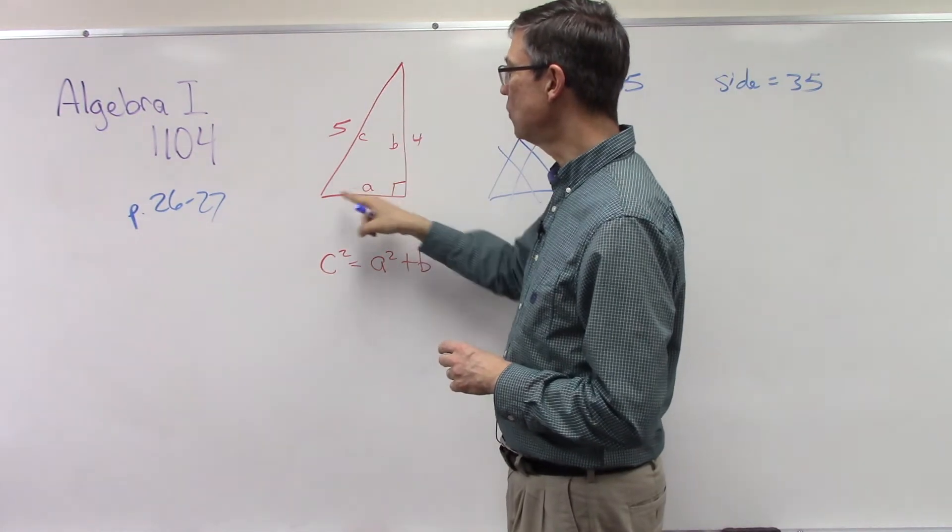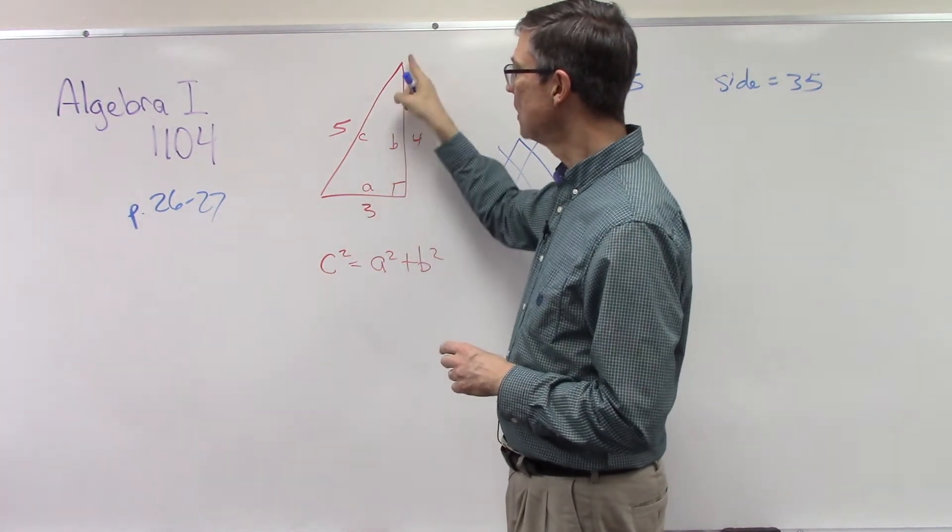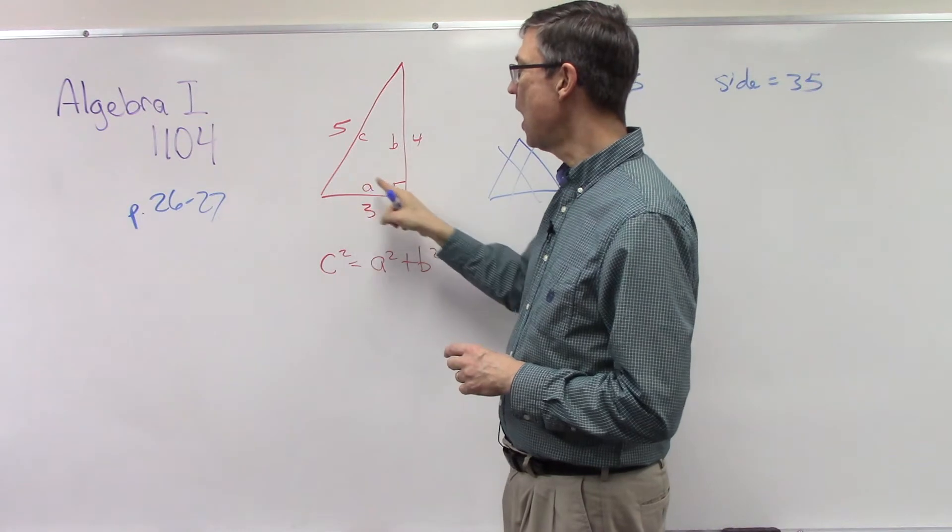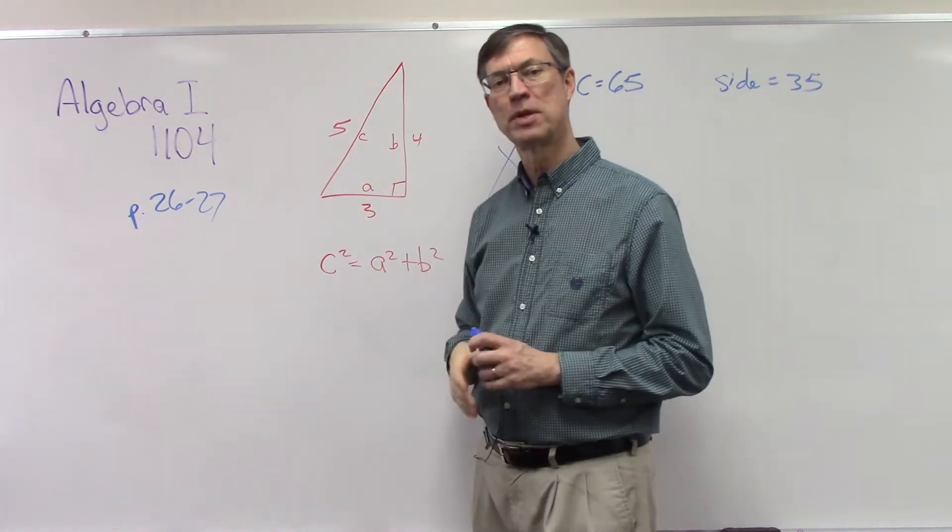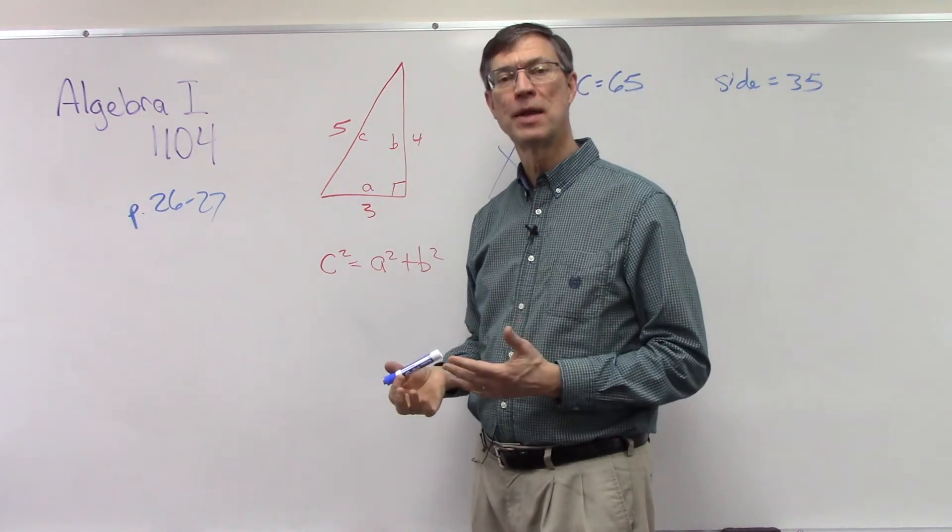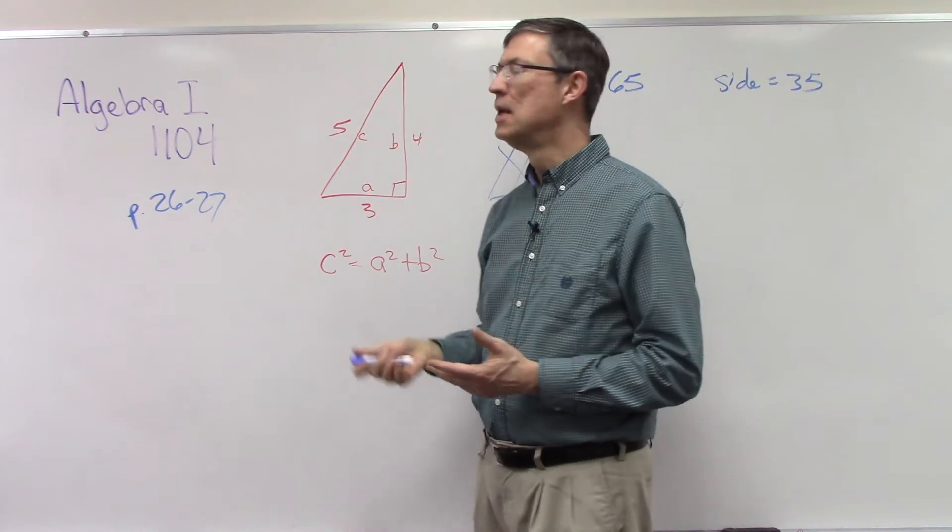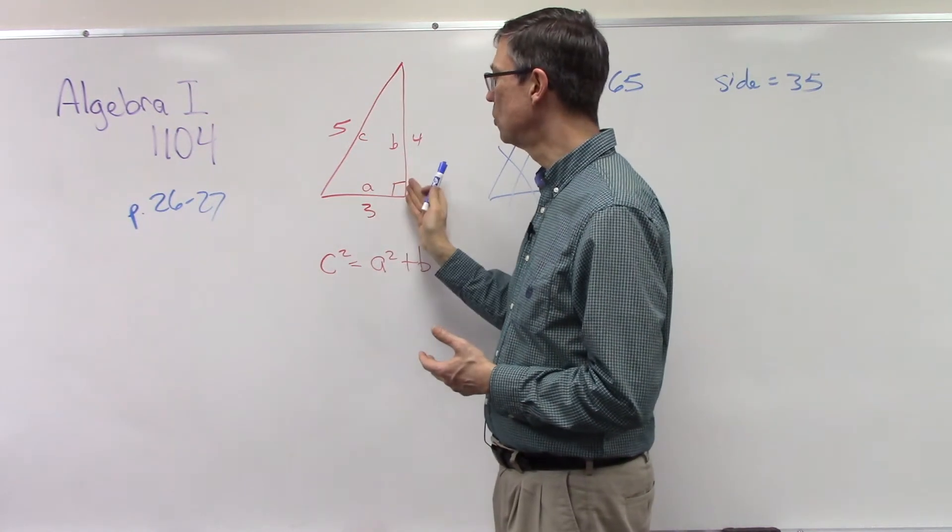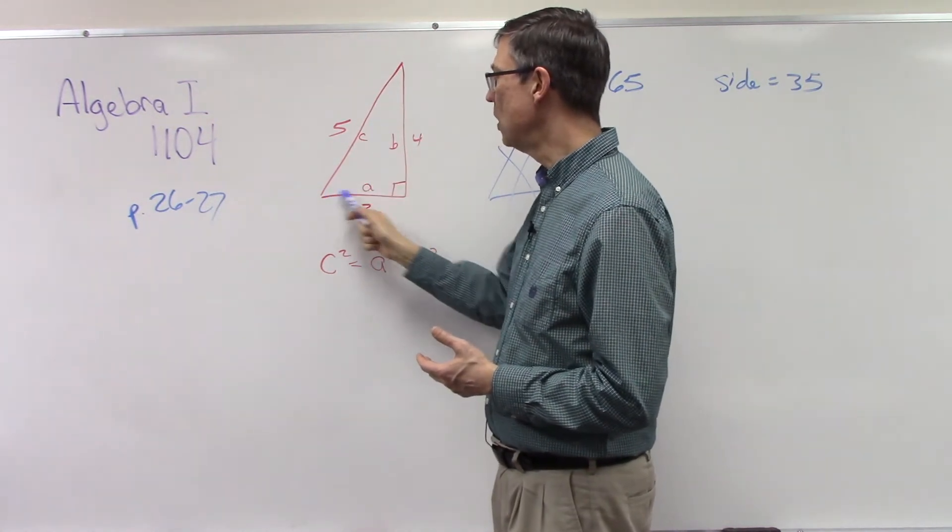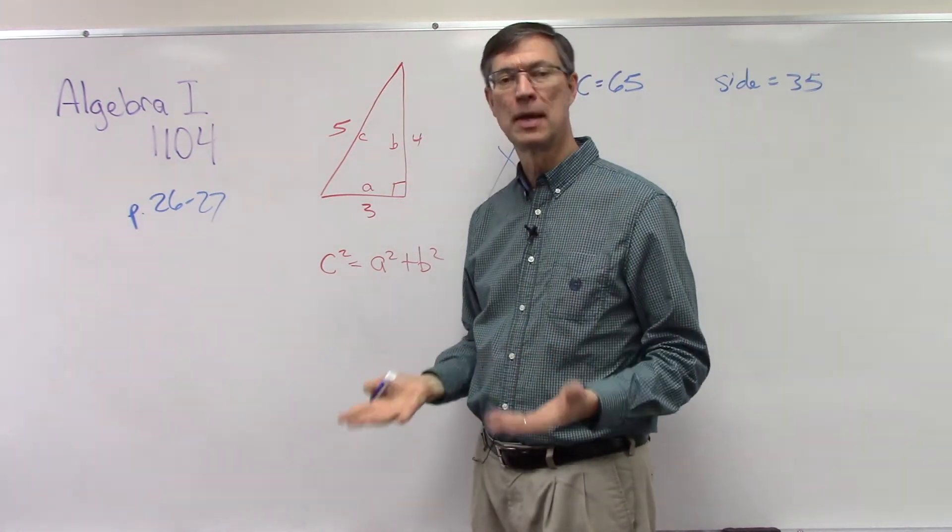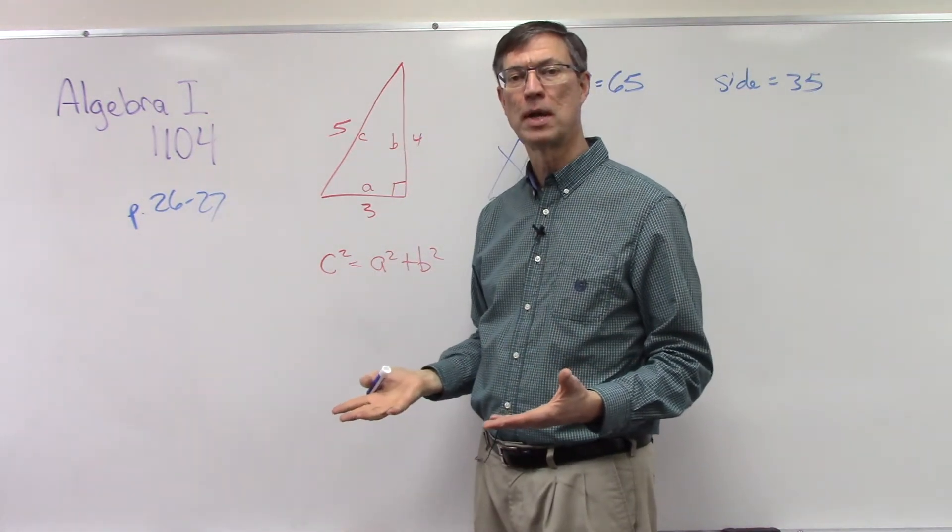But when we have a right triangle, this side, the longest side opposite the right angle, has a special name. It's called the hypotenuse. So the hypotenuse is across from the right angle. The other two sides are just called legs, the legs of the right triangle.